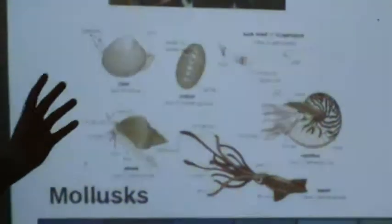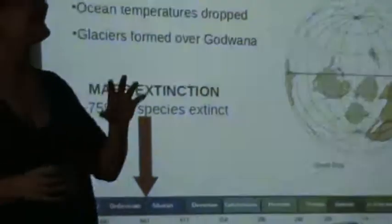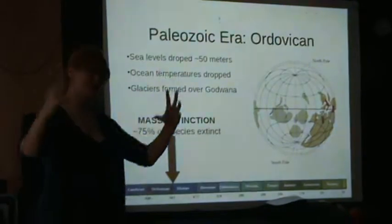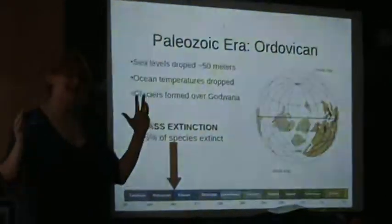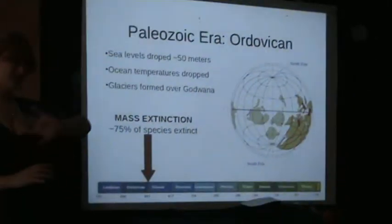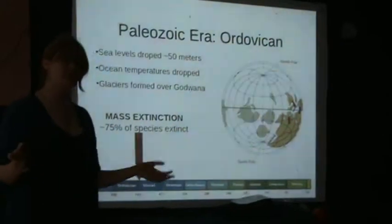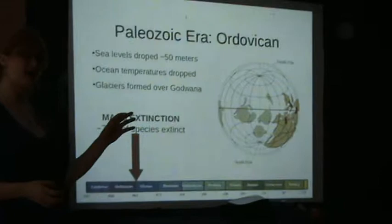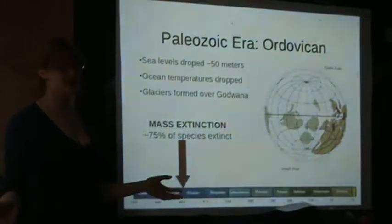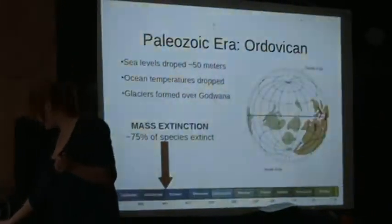Towards the end of the Ordovician period, Gondwana started moving towards the south pole. What happened was we saw sea levels drop about 15 metres, the oceans got really cold, and glaciers started forming over the entire of Gondwana. This changed the climate dramatically. As a result, 75% of the species present at that time died — it was a massive extinction event. With the remaining 25% of species, we move on to the Silurian period.